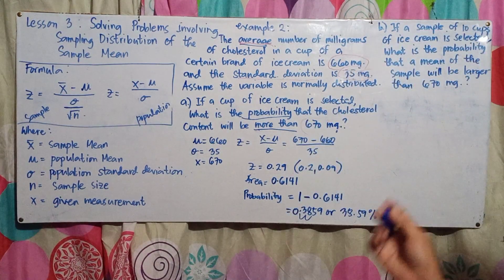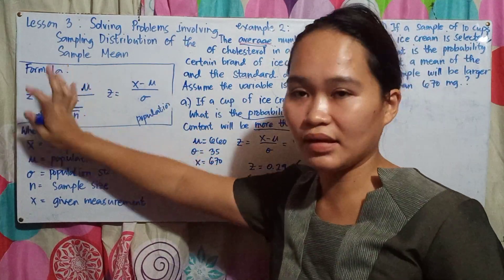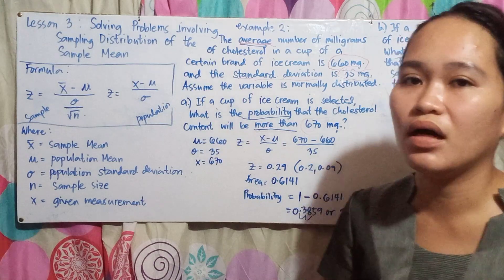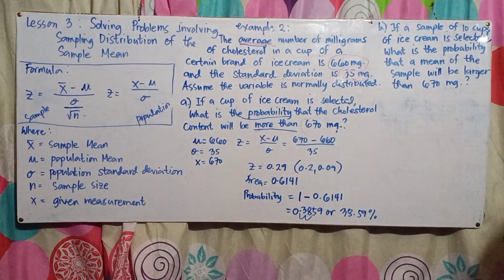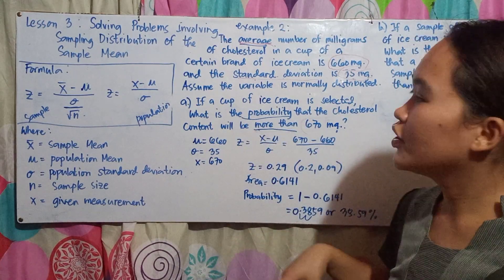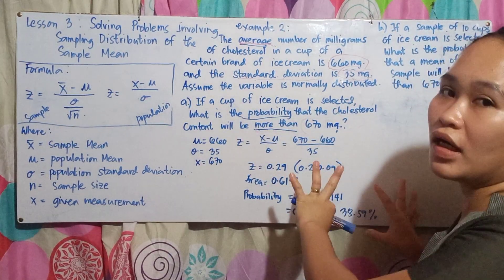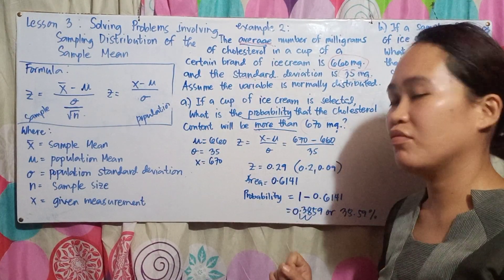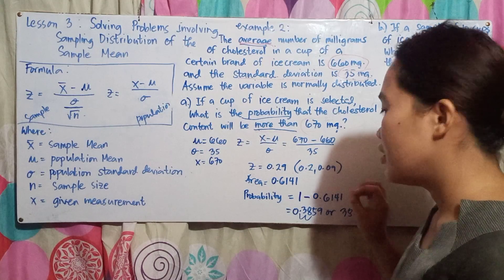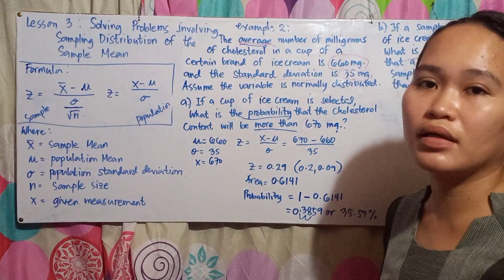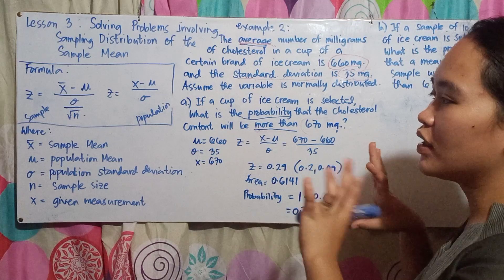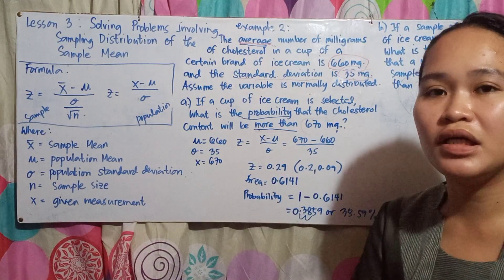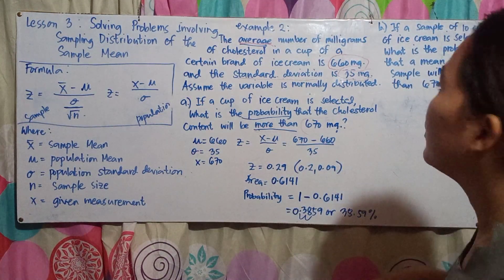The process is almost the same; the only addition is the sample Z formula when we are dealing with a sample. Previous discussions used the population formula. If the given is 'between', subtract the two areas. If 'more than', use 1 minus the area. If 'less than', the area is directly the probability.